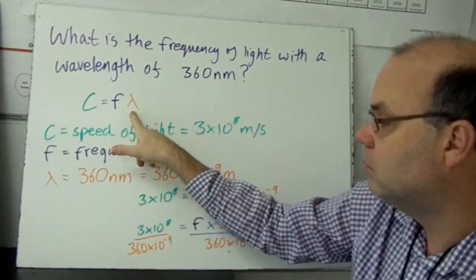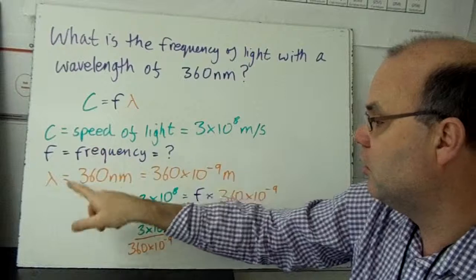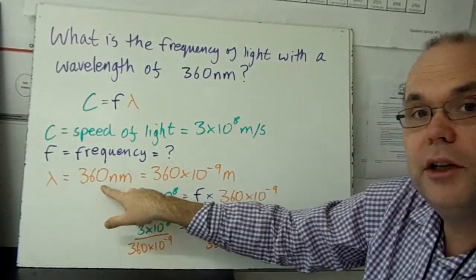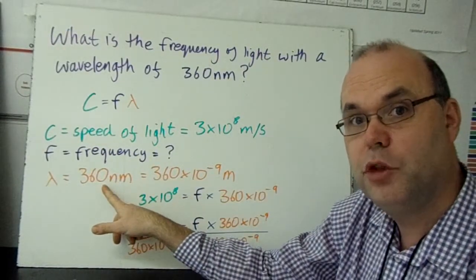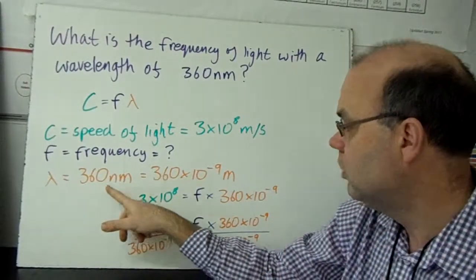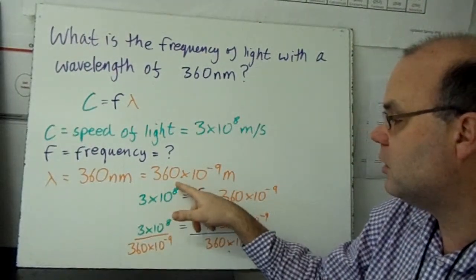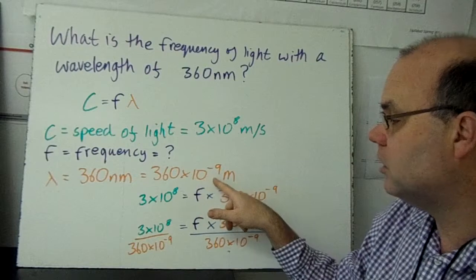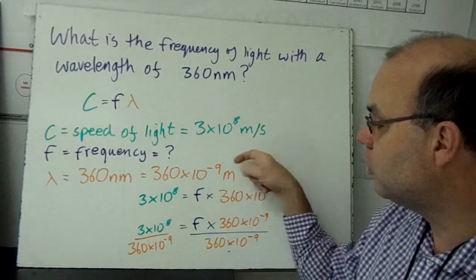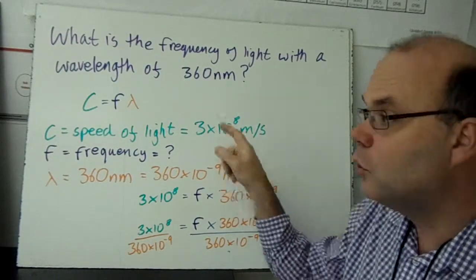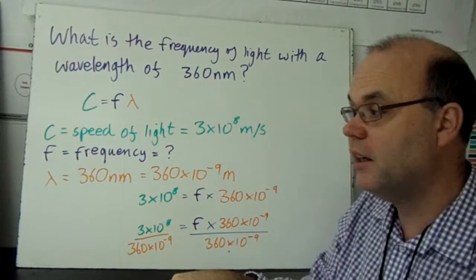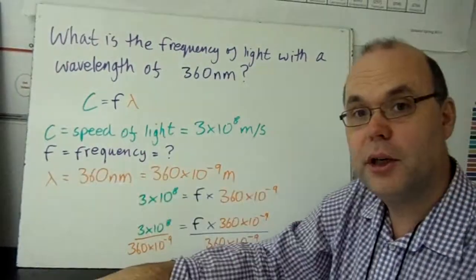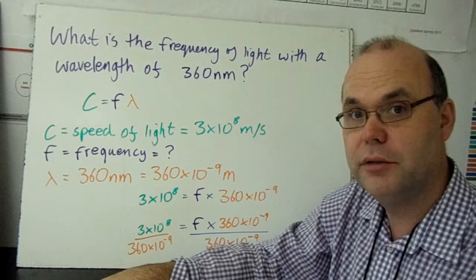F is the frequency, and that's what we're being asked. And lambda is the wavelength, which they've told us is 360 nanometers, which we need to put into meters. So that's 360 times 10 to the minus 9 meters. If you're not clear on this bit, rewind a little bit and look again at the nanometer conversions.